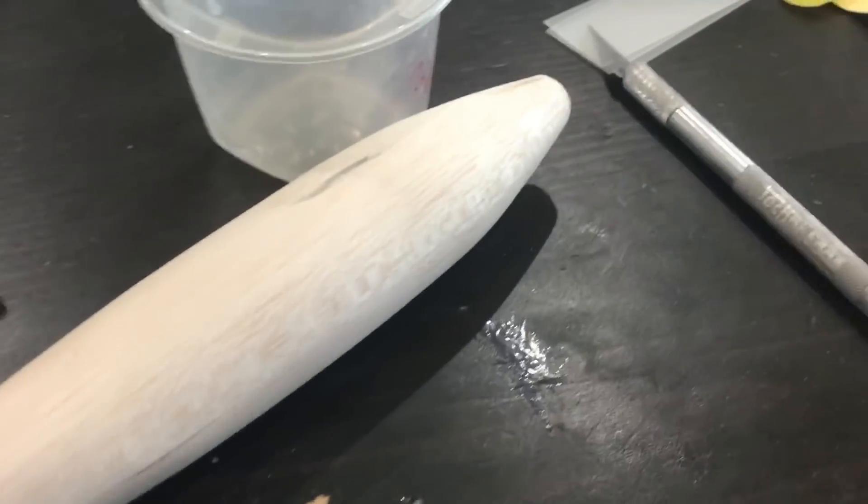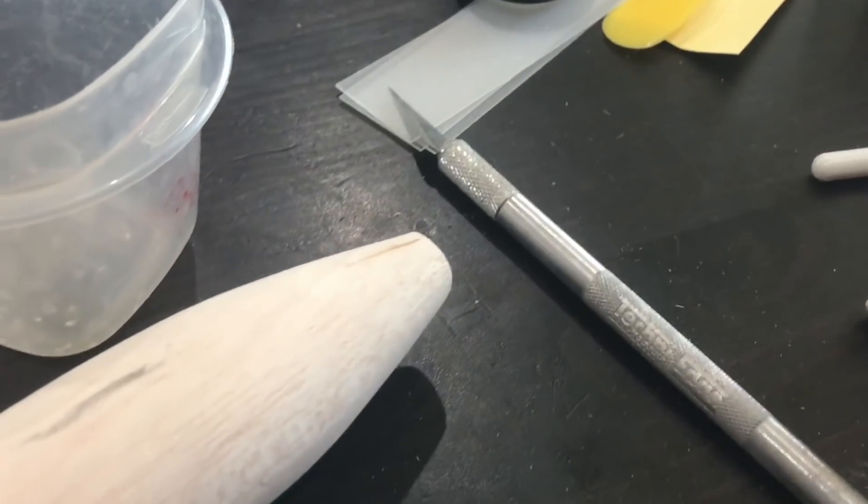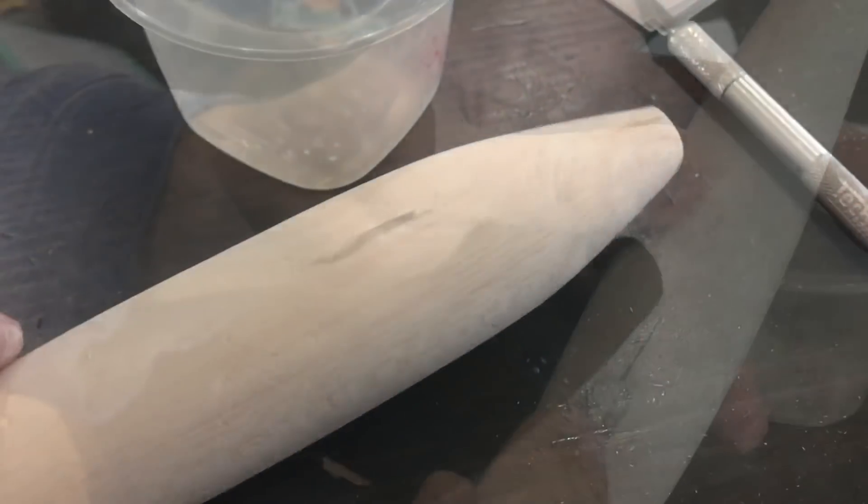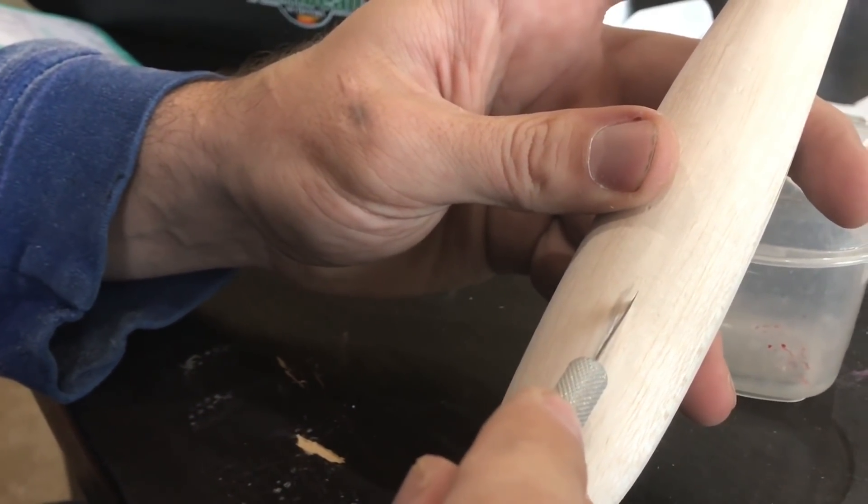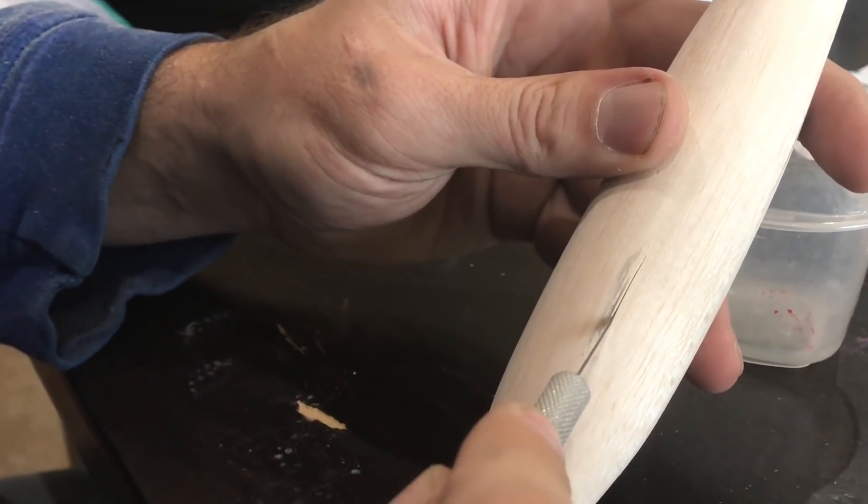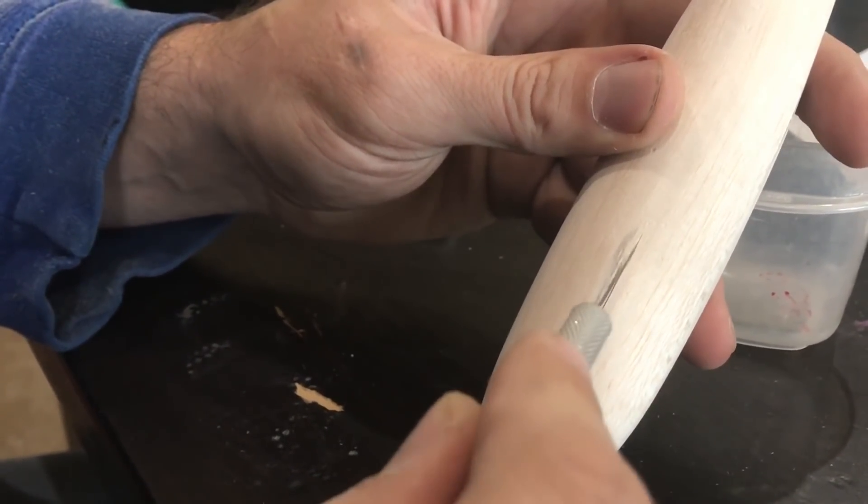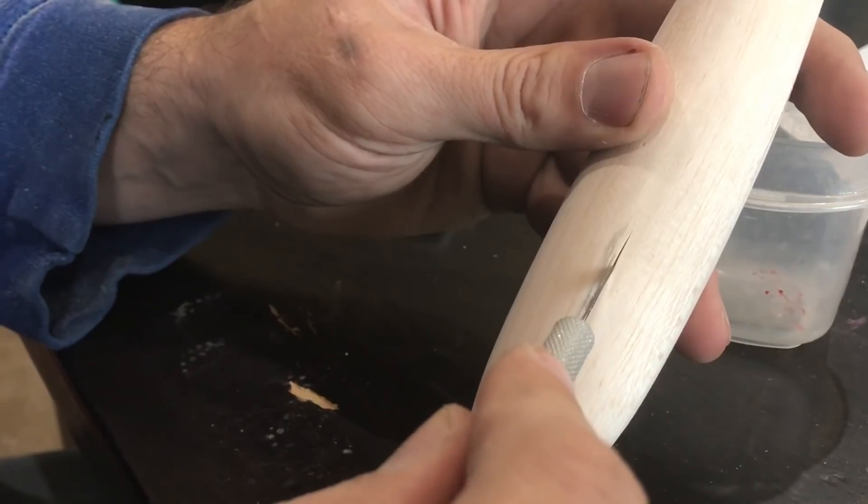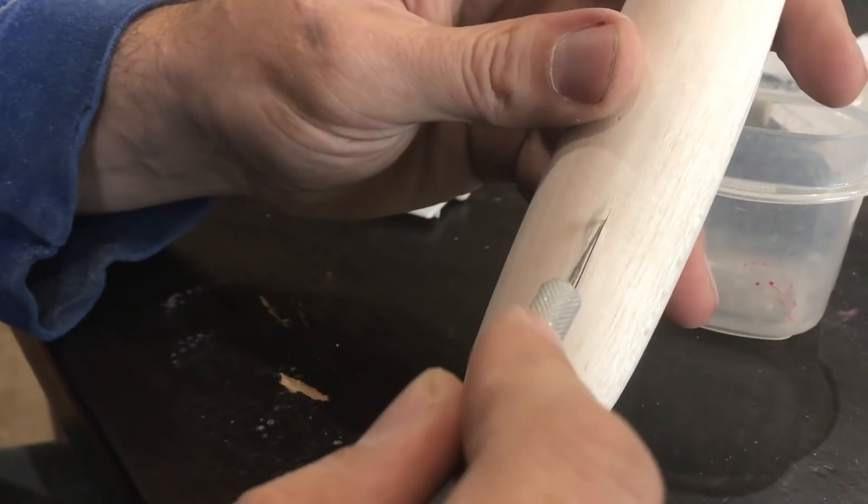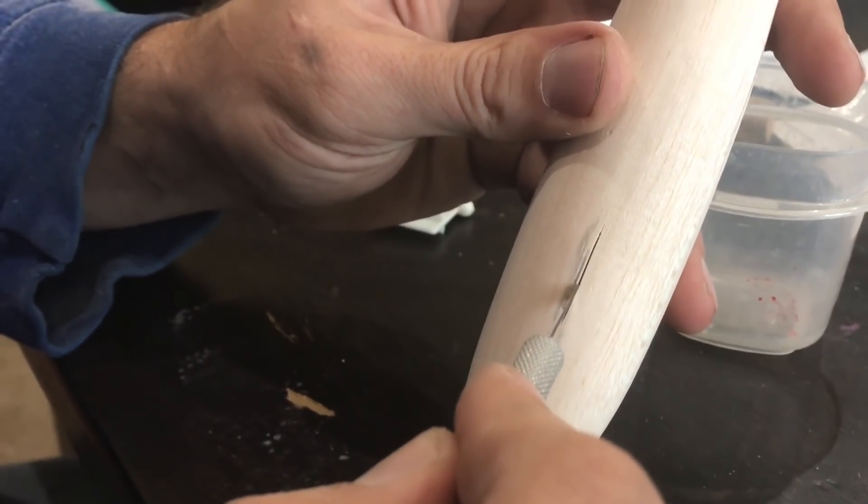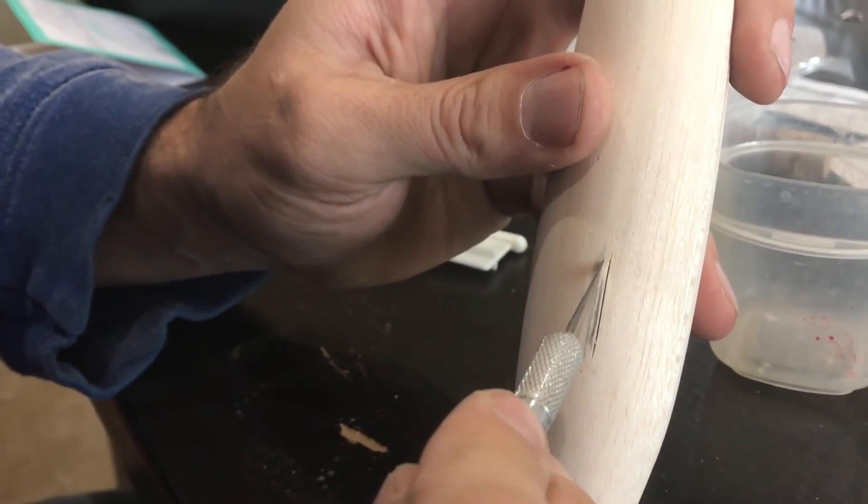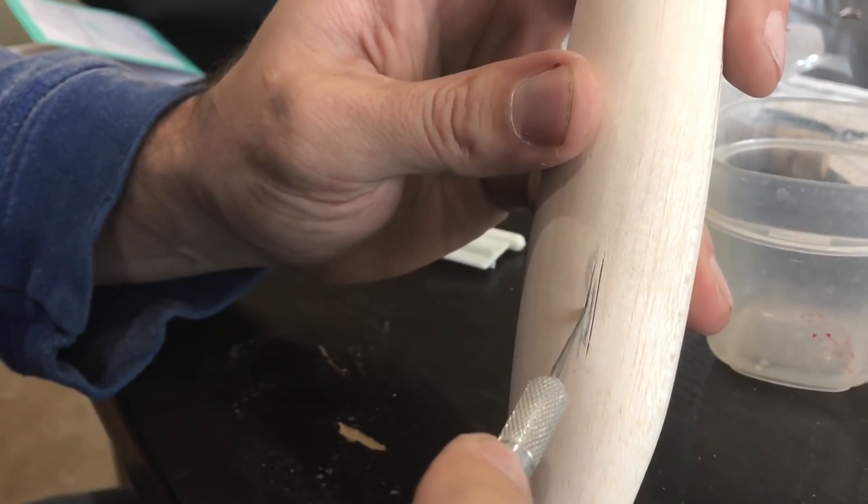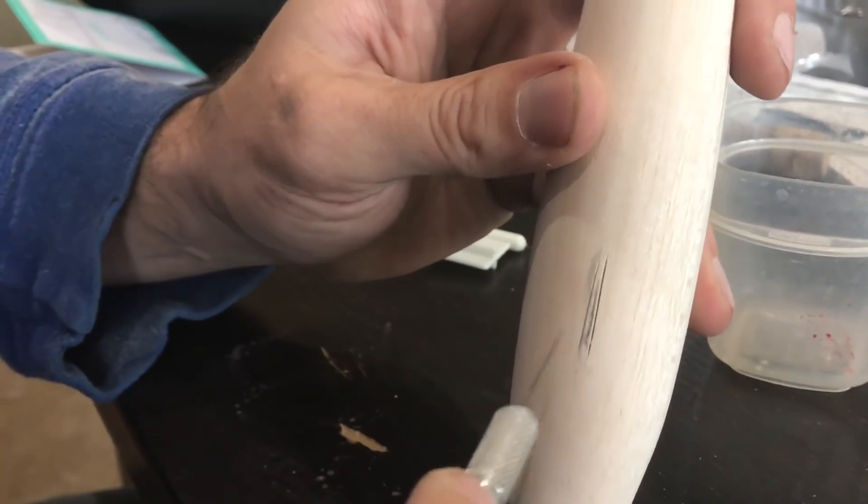Now because we're using an exacto, Dad's going to do the next part. You don't have to press very hard because the balsa wood is very soft. But I like to make a couple different passes as I go down, and I actually make two cuts next to each other.